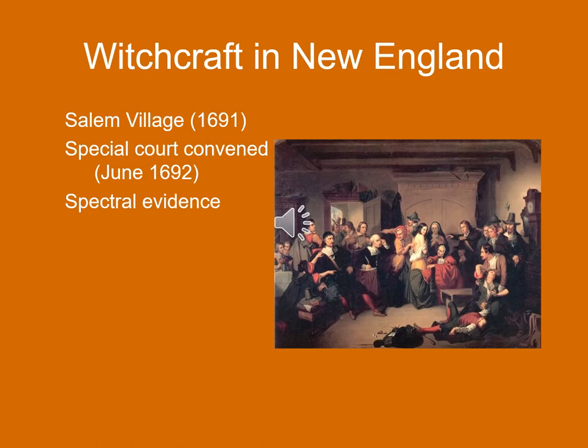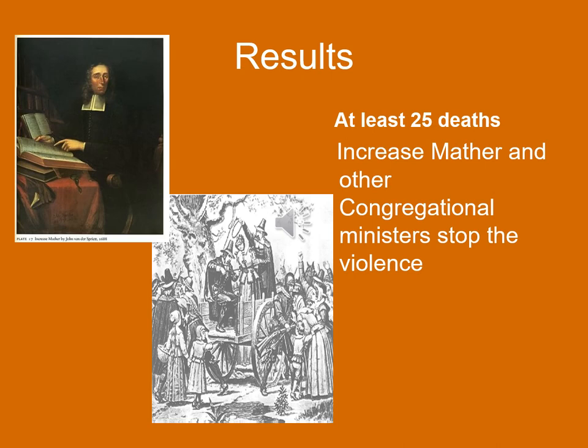Things quickly got out of hand. There was already a lot of conflict in Salem Village between Salem Town and Salem Village, with many competing land claims, so this was rife for abuse. By June of 1692, they convened a special court. In the end, over 300 individuals were accused of witchcraft. Perhaps most troubling was the court's acceptance of spectral evidence — the visions or dreams of witnesses against the accused — used as evidence at court to convict them, resulting in a number of people being executed.